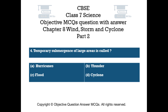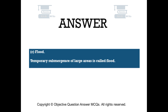Question number 4. Temporary submergence of large areas is called — Option A: hurricanes. Option B: thunder. Option C: flood. Option D: cyclone. The right answer is Option C: flood. Temporary submergence of large areas is called flood.